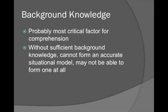Background knowledge is the critical factor for comprehension. If you're reading a biology textbook, it's difficult because you're trying to learn the background knowledge you don't already have, so comprehension can be poor. Without sufficient background knowledge, you can't form an accurate picture of what's going on — sometimes you can't form one at all. This is like trying to read the fourth book in a series without the previous context, which will be very confusing.